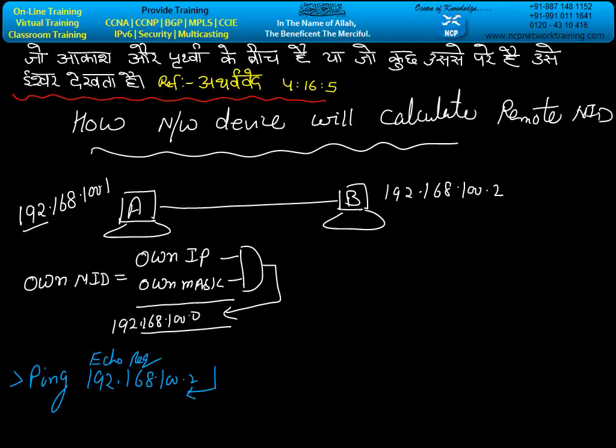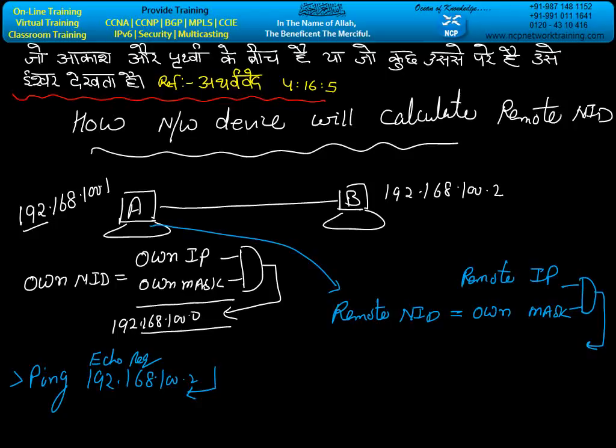But before applying the procedure for the echo request, machine A will calculate the NID of machine B. Let's see how the machine will calculate remote NID. Remote NID equals remote IP - machine A will take the remote IP address along with its own mask and apply it after converting into binary on the AND gate. The output will be the remote NID.